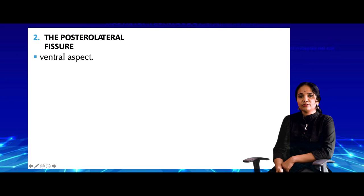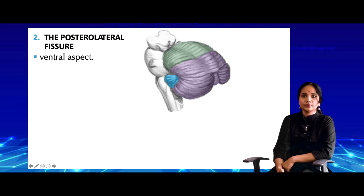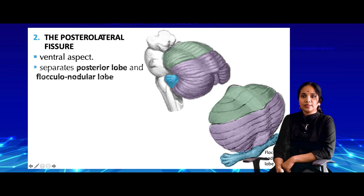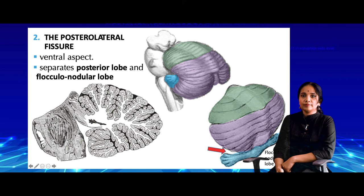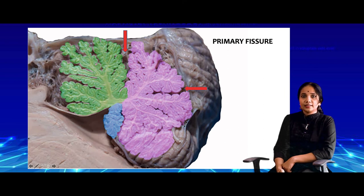The posterolateral fissure is best seen from the ventral aspect. As compared to an oyster, the cerebellum is folded behind the brain stem, with the anterior lobe in front and the posterior lobe behind. That small area is the flocculonodular lobe. When the cerebellum is opened out, the flocculonodular lobe is visible at the bottom, with the posterolateral fissure separating it from the posterior lobe. In summary: the anterior and posterior lobes are separated by the fissura prima; the superior and inferior surfaces by the horizontal fissure; and the posterior lobe from the flocculonodular lobe by the posterolateral fissure.